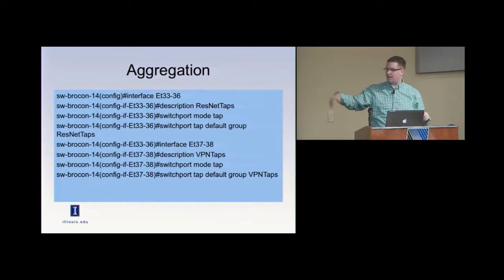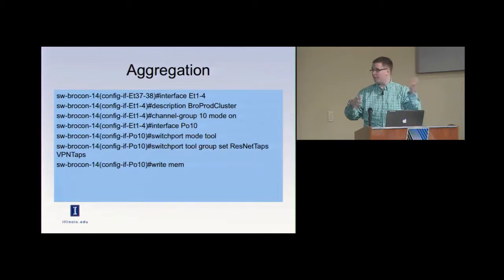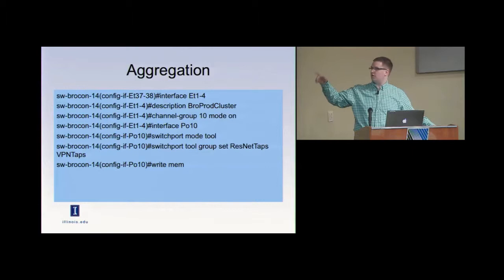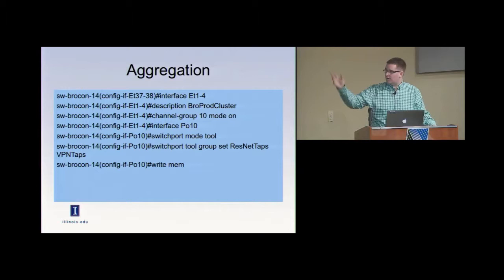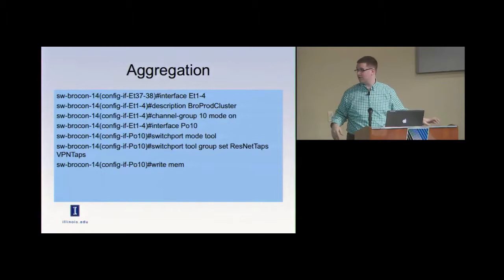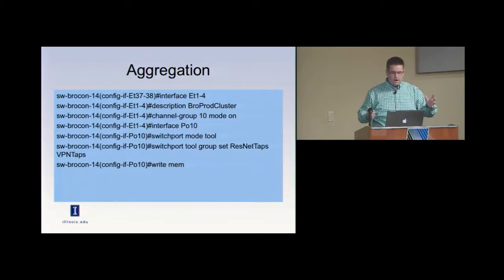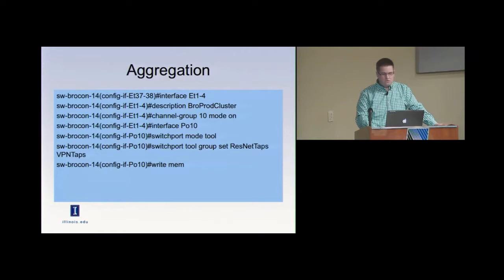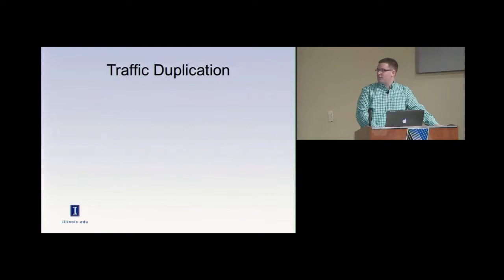The other side of the switch is saying: now I've got all this data coming in, where do I want it to go? I want it to go out a nice big group of interfaces — let's say four, put them together and call them the 'production cluster' port channel, setting the mode on so it's just doing it without LACP negotiation. Then we go in to configure that port channel, tell it this is a 'tool' — which is the opposite of a tap, just their terminology — and tell it to take all the traffic from both of those groups. That's literally about 15-20 lines, and that's how you do it. That actually has all of that traffic going in those interfaces and going out the other interfaces. It's a couple lines of config, and if you want to add another couple interfaces, it's really pretty trivial.